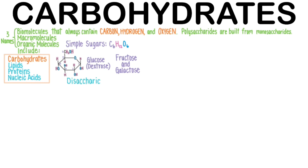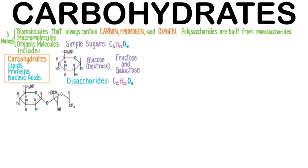Disaccharides are two simple sugars put together, usually making the formula C12H22O11. The pattern of two-to-one hydrogens to oxygen is typical. Here is glucose bonded to a fructose to make sucrose, or what you know as table sugar. Lactose, milk sugar, and maltose are the two other well-known disaccharides.